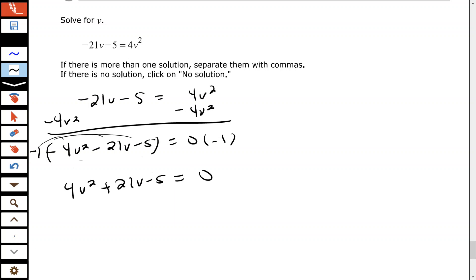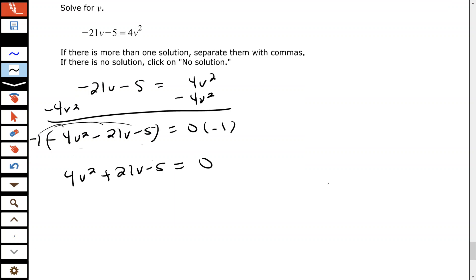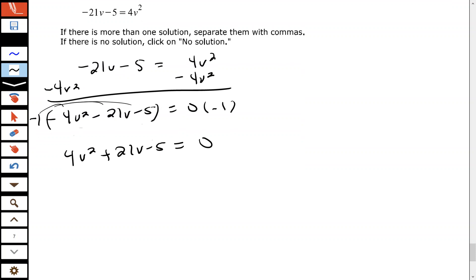Now I want to try to factor, now that I have everything on one side set equal to 0. I want to factor 4v² + 21v + 5, so I need to use the AC method to try to factor this. That should be plus 5, I'm sorry about that mistake.